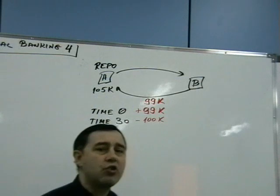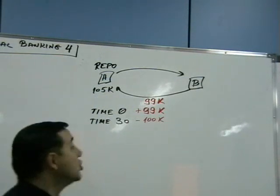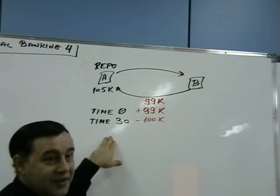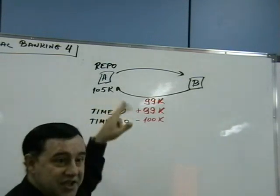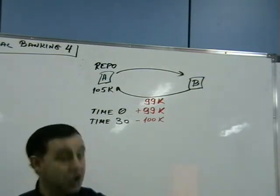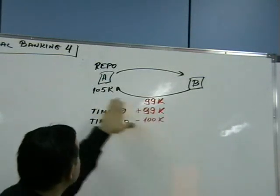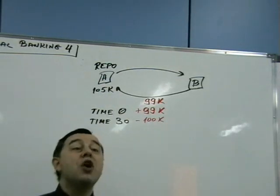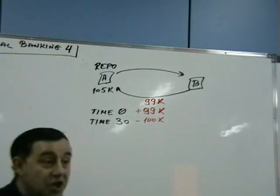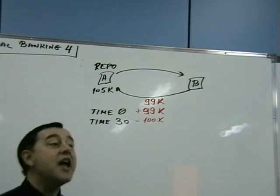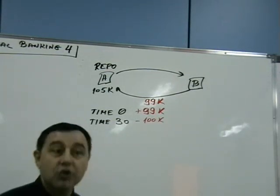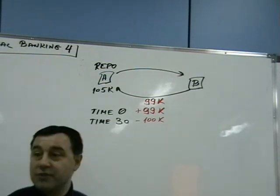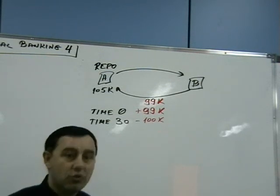The over-collateralization serves as a super-strong incentive to return the loan. Remember, it wasn't even technically a loan — it was originally a sale, so you already own those securities. There is no repossession risk, no legal risk. You already own them. This makes the repo extremely low risk.